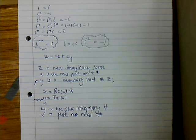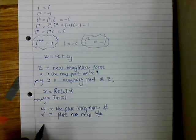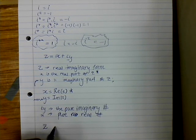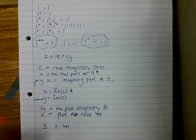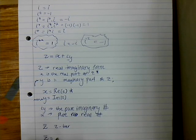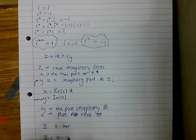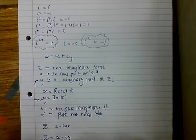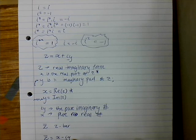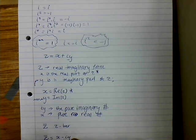Now we're going to go into conjugation. The conjugate of z, written with a bar over z and pronounced as z-bar, is equal to x minus iy. Note that we changed the sign of the imaginary part of z.